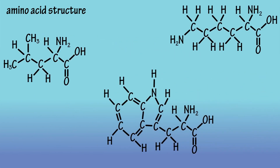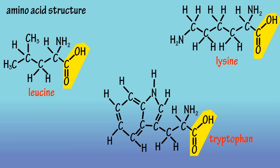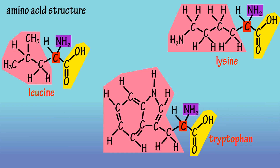On the screen I have three different amino acids: lysine, tryptophan, and leucine. You can see that each has a carboxyl group, an alpha carbon, an amino group, and an R group that is different from one another.